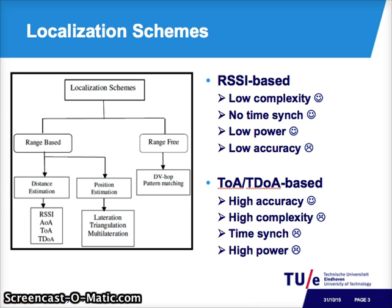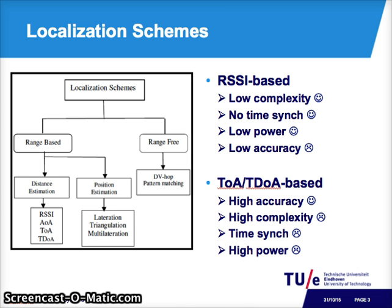Localization schemes can be classified into range-based and range-free. Within range-based schemes, two main classes are RSSI-based and time-of-arrival-based. RSSI-based schemes have very low complexity, no time synchronization requirement, and low power, but also very low accuracy. Time-of-arrival-based schemes have high accuracy, but pay in terms of high complexity, time synchronization, and high power.